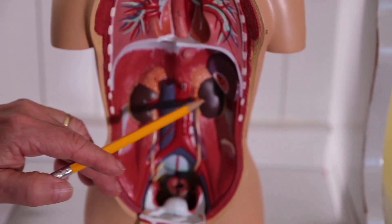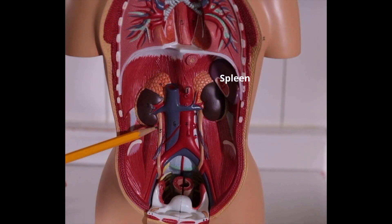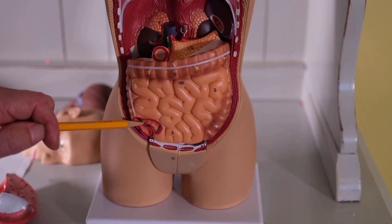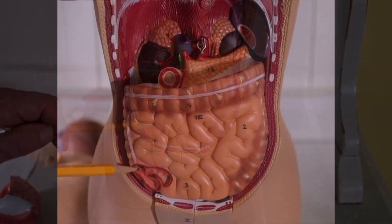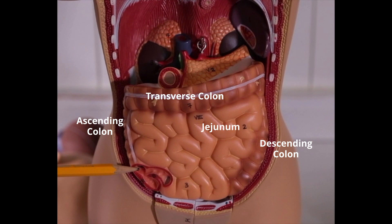Now here's a different view with the small and large intestines removed. Then let's go back to the small and large intestines and label a couple things.